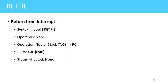The next instruction is RETFIE, which is used to return from an interrupt service routine. Whenever this instruction is executed, two operations are performed: first, the top of stack — which holds the return address — is popped out and stored in the program counter.